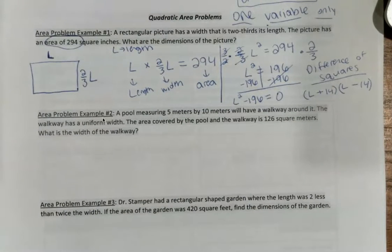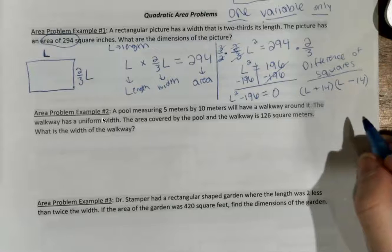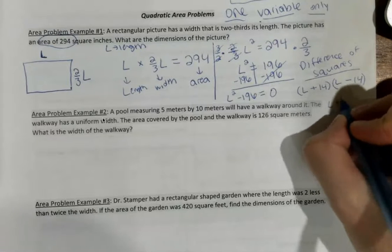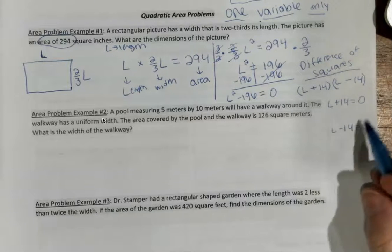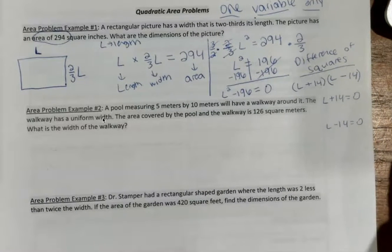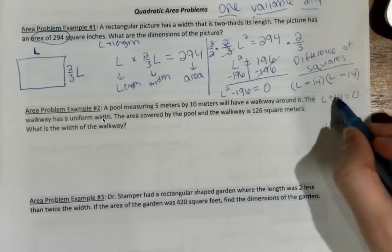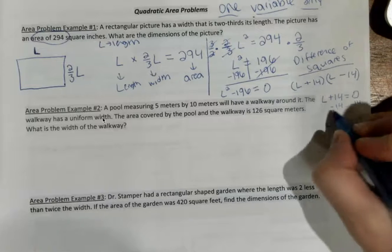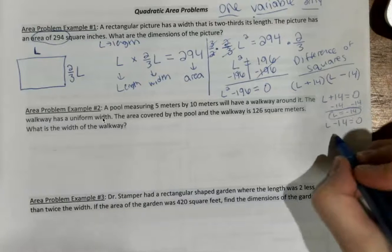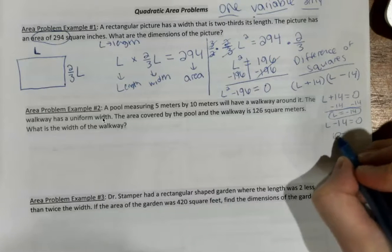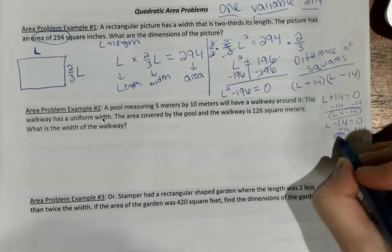My difference of squares shortcut. I have two parentheses, a plus and a minus, and all I'm going to do is put the square root of each term in these binomials. I know the square root of L squared is just going to give me L. And the square root of 441 is 21. But, the last thing I need to do is set both of these factors equal to zero. L plus 21 is equal to zero. And L minus 21 is equal to zero.